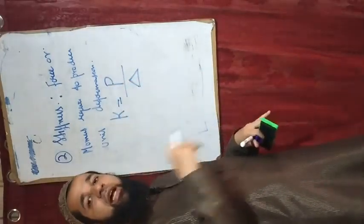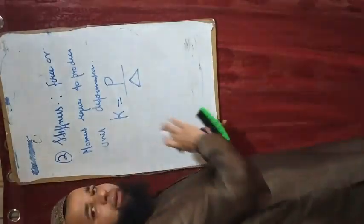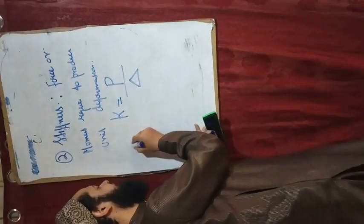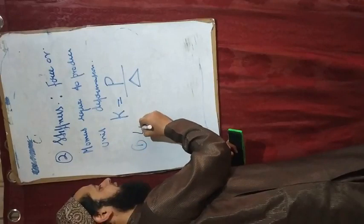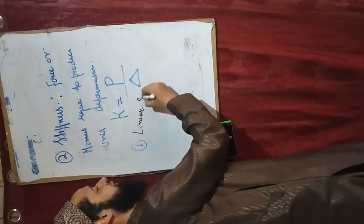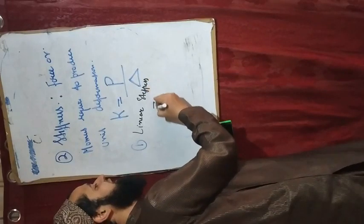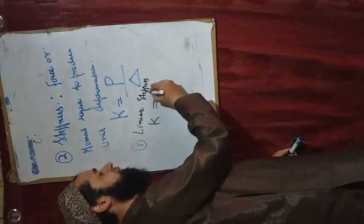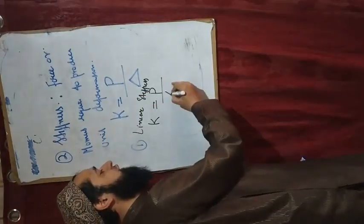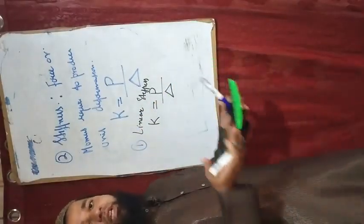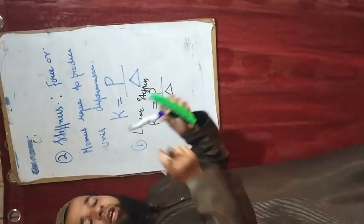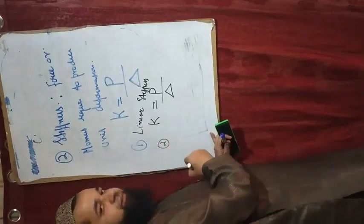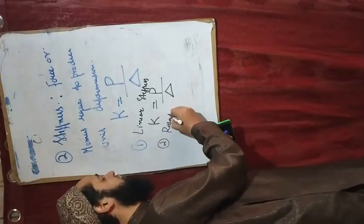In this case you will have two types. First is linear stiffness: force required to produce unit displacement. How much force is needed to produce unit displacement — that is called linear stiffness. The second type is rotational stiffness.